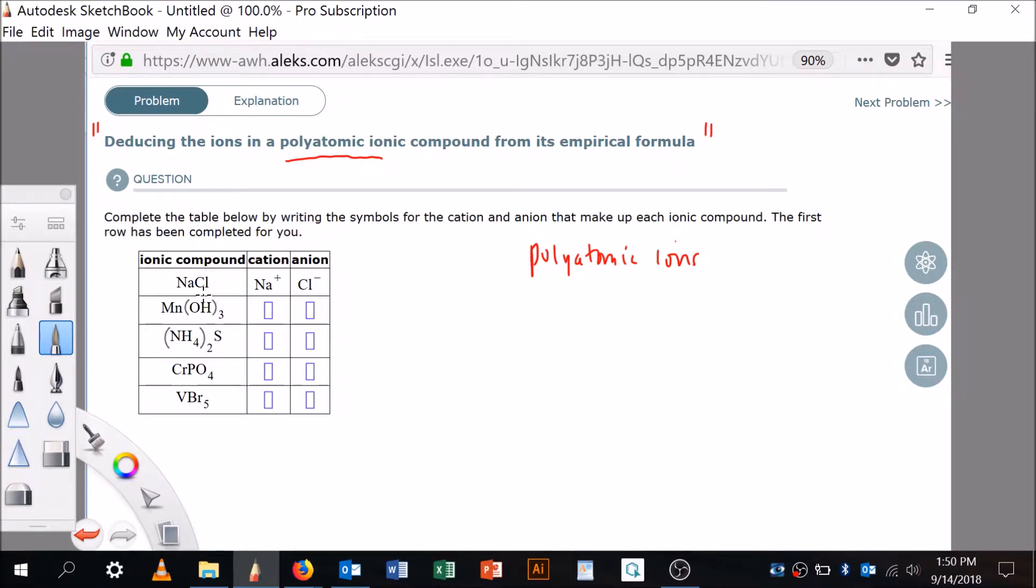Okay, so what I'm going to do, first of all, let's start at the top. The question stems are always the same: complete the table below by writing the symbols for the cation and the anion that make up each ionic compound. The first row has been completed for you.